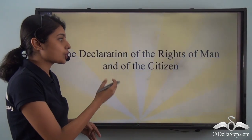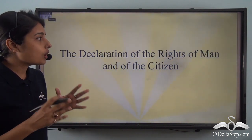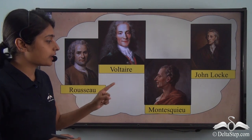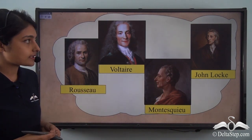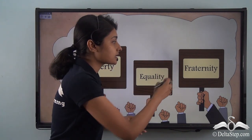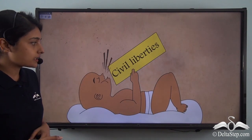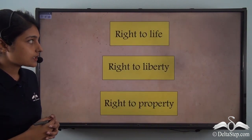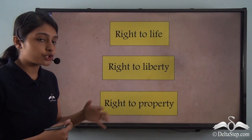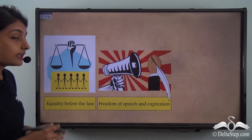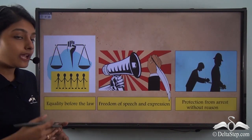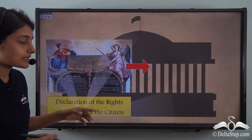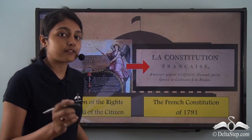This document stated that all the citizens of France are now equal. Ideas of Enlightenment thinkers like Rousseau, Voltaire, Montesquieu and John Locke had inspired this document. It meant that liberty, equality and fraternity would now be given to people. Along with political liberty, people would also get certain civil liberties that cannot be taken away. They would have the right to life, to liberty and to property. All citizens would be equal before law, would have freedom of speech and expression, and would be protected from arrest without reason. This paved the way for the French Constitution of 1791.